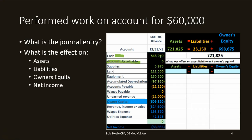Assets have debit balances. We need to make accounts receivable go up because people owe us more money. How do we make something go up? We do the same thing to it, which in this case would be a debit. If we debit receivable, we're going to have to credit something. Why are people going to owe us money in the future? Because we did work — in order to generate revenue. Revenue has a credit balance. It only goes up; revenue generally only goes up.